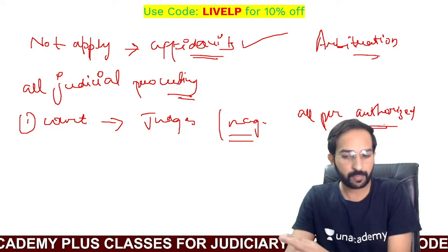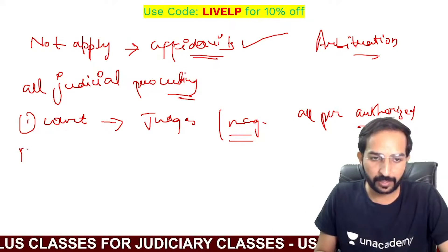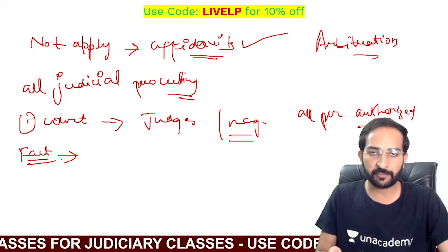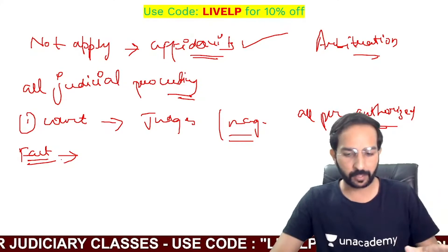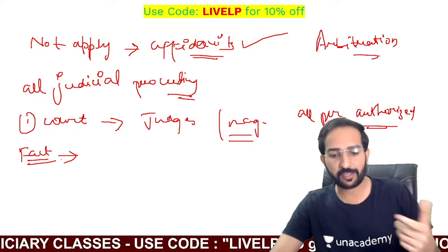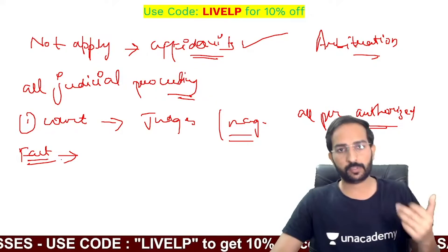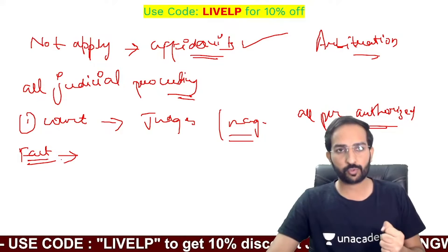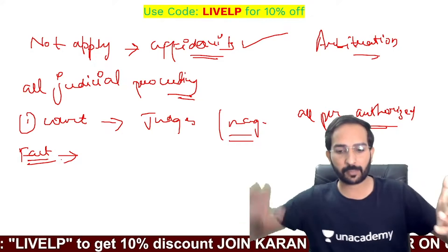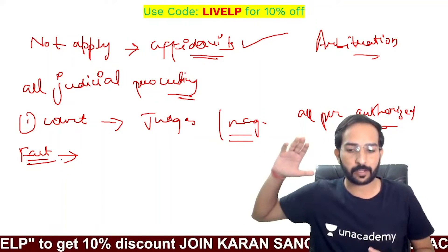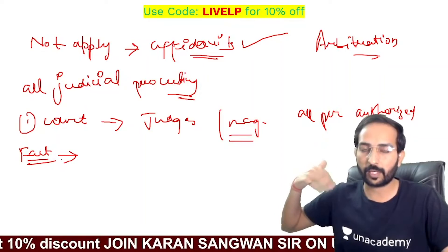The Indian Evidence Act does not apply to arbitrators — that is explicitly excluded. Now, if we talk about 'fact' — what is a fact? How is a fact to be proved? There are two types of facts: external facts and internal facts, also called physical facts and psychological facts. A physical fact is something external — something you can perceive. A psychological fact is a mental state — such as pain, fear, or a state of mind. These are the two categories of facts under the Act.